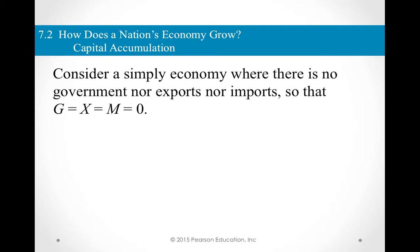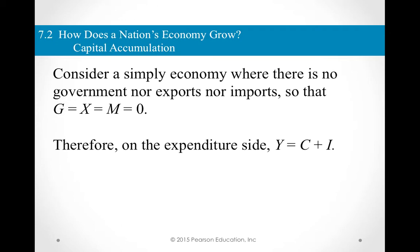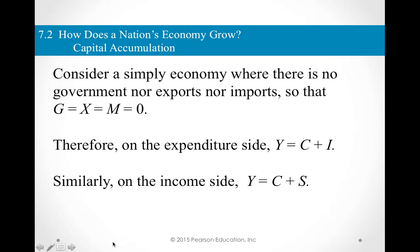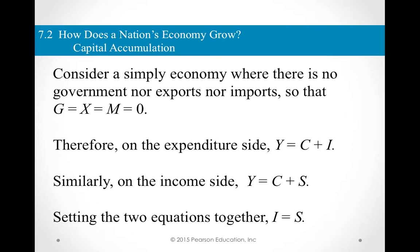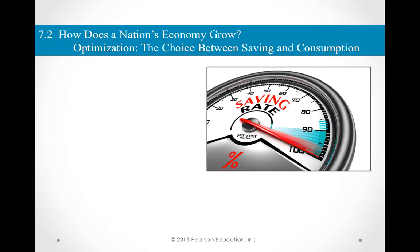Let's think about capital accumulation. Consider a simple economy with no government, no exports, no imports — so no G, no X, no M. On the expenditure side, Y equals C plus I. On the income side, income equals consumption plus savings. Combining these two equations tells us that in such an economy, savings should equal investment. There is a whole financial sector which works to channel your savings to the best possible use, giving you the best rate of return for a given amount of risk.